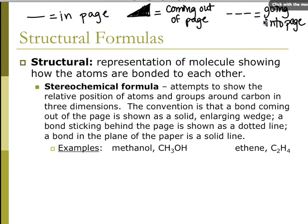Behind the page is a dashed line. A bond in the plane of the page — meaning that bond is on the same plane as the page — is a straight line.